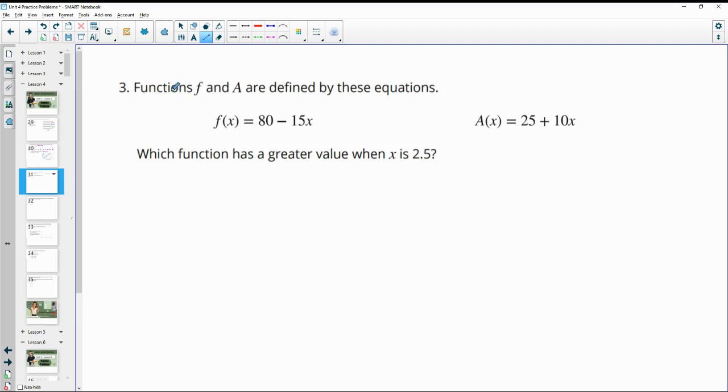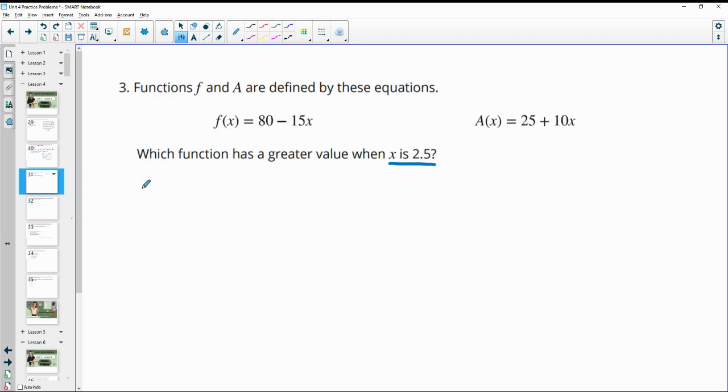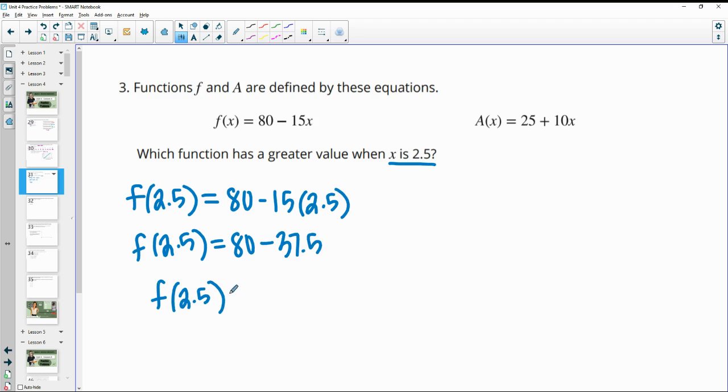Number 3. Functions f and a are defined by these equations. Which function has a greater value when x is 2.5? So this means that we're going to plug 2.5 into each function. So f of 2.5 means that we're going to plug 2.5 in for x. And then we will evaluate this. So we will do 15 times 2.5. So we have that minus 37.5 here. So f of 2.5 is equal to 80 minus 37.5, which gives us 42.5.